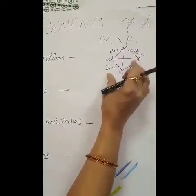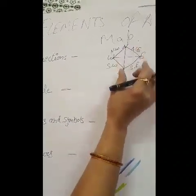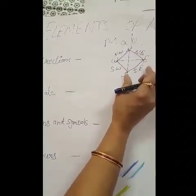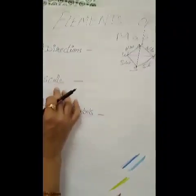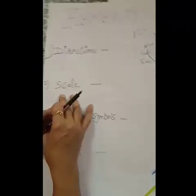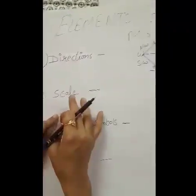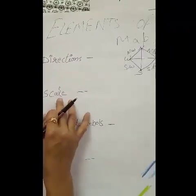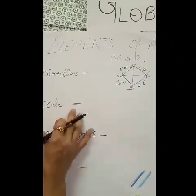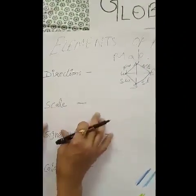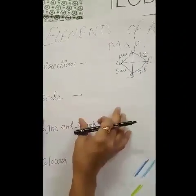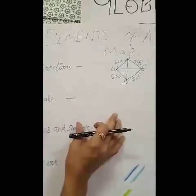So we have four cardinal directions and four intermediate directions — north-east, south-east, south-west and north-west. The next element is scale. Scale is the ratio between the distance on land and the distance shown on the map.